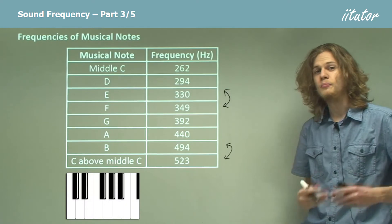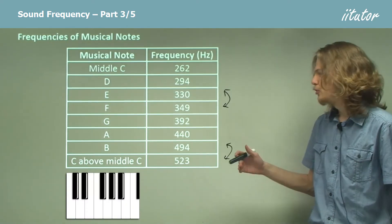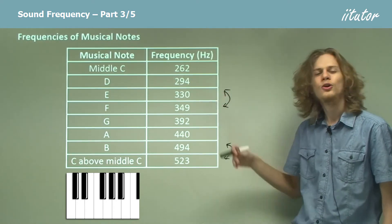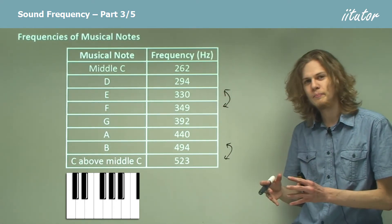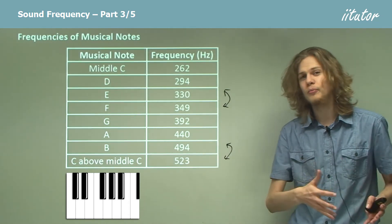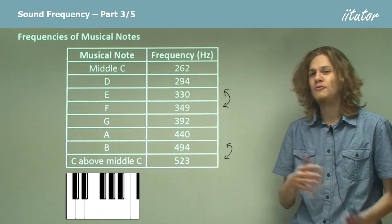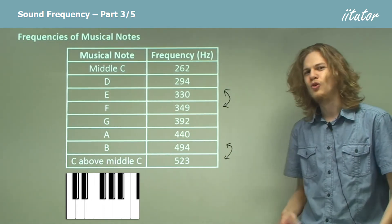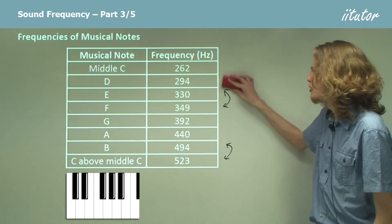If you look at these notes on a piano keyboard, then you'll notice that B and C and E and F don't have any black notes in between them. So this means that rather than being a whole tone apart, they're only half a tone apart, or a semitone. But that's more musical theory, so we won't go too much into it.